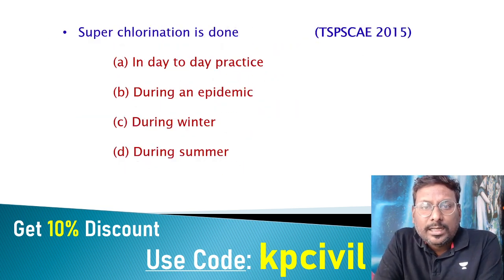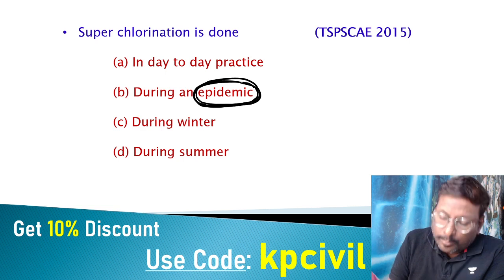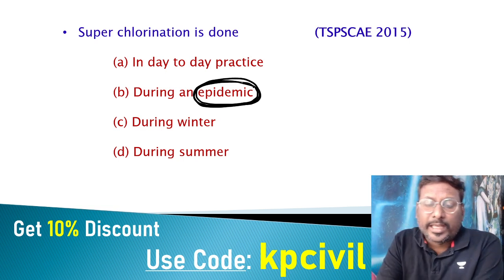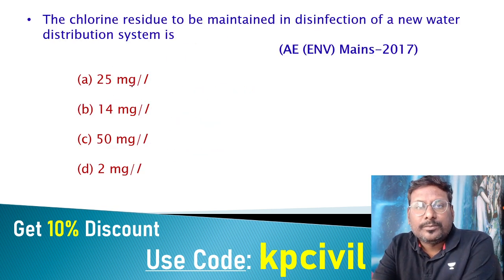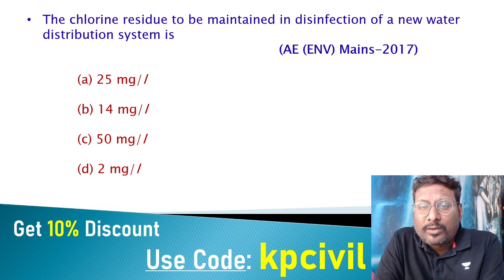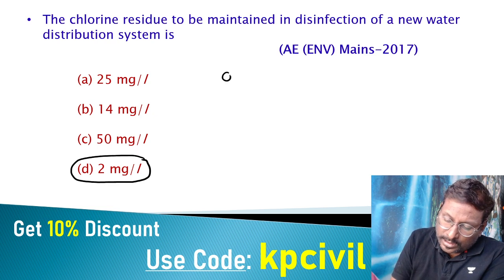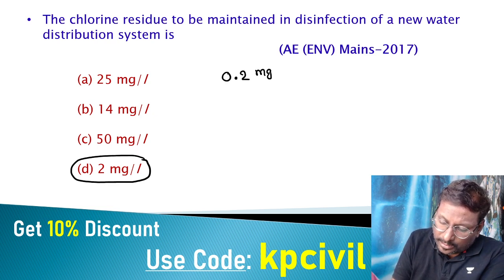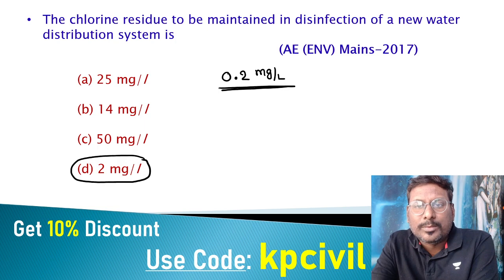Super chlorination is done during an epidemic — when a waterborne disease is spreading. For disinfection of a new water distribution system, chlorine residue to be maintained is 2 mg/L. Generally we take 0.2 mg/L, but a new distribution system needs a higher amount of chlorine residue — that is why 2 mg/L.